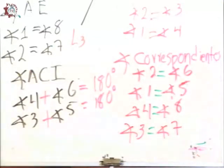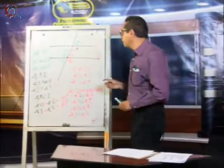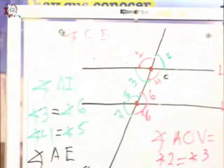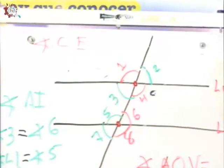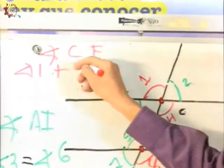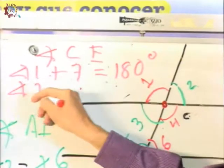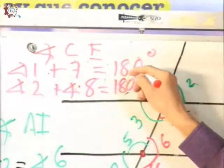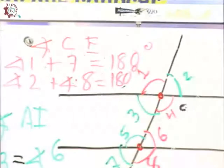¿Sí está claro? ¿Sí está comprendido? Me faltaría ya nada más uno: los ángulos colaterales externos. Si los internos estaban adentro, los externos afuera. También tienen la característica de que suman 180 grados. Entonces, el ángulo uno más el ángulo siete deben sumar ambos 180 grados. El ángulo dos más el ángulo ocho suman 180 grados. Esos son los ángulos que se forman a través de dos líneas rectas paralelas y una transversal.